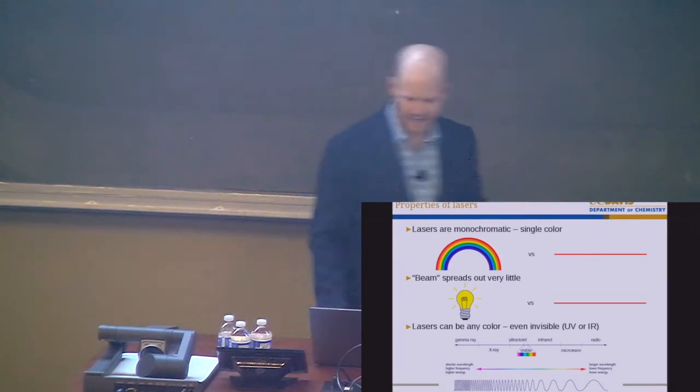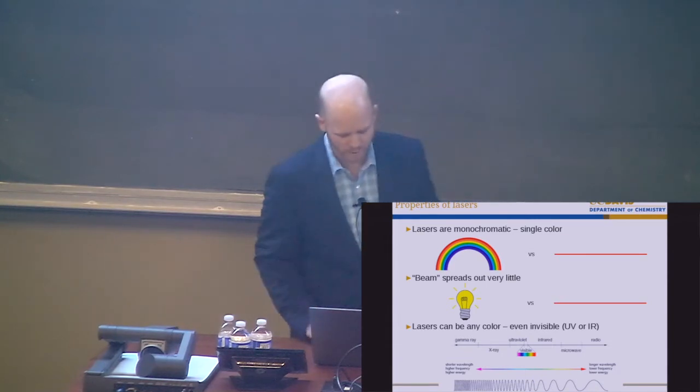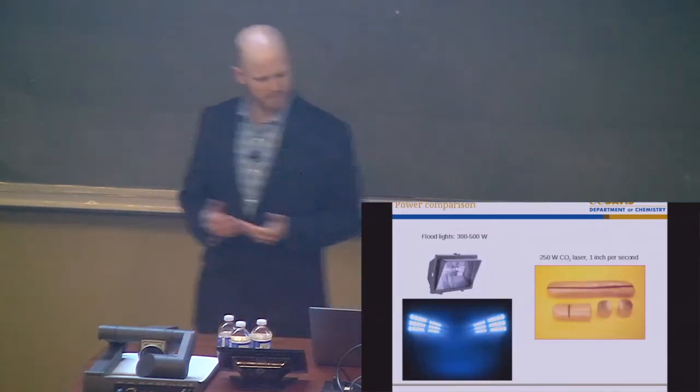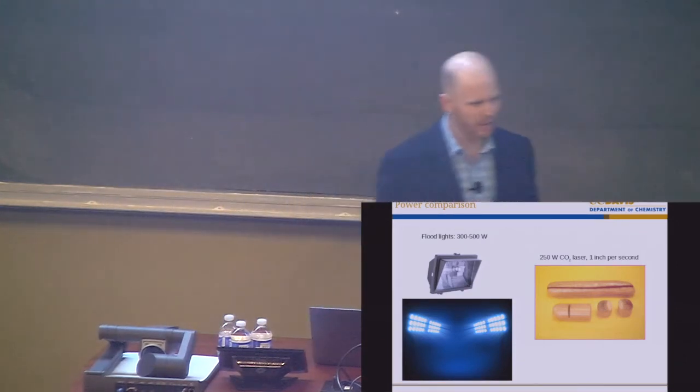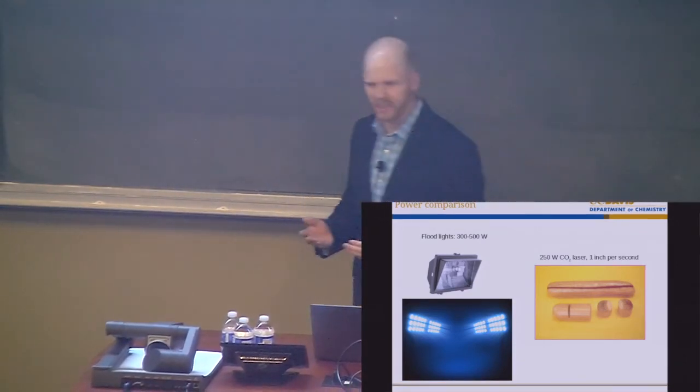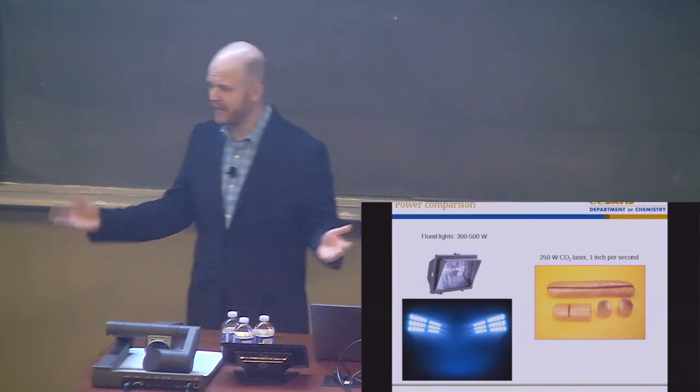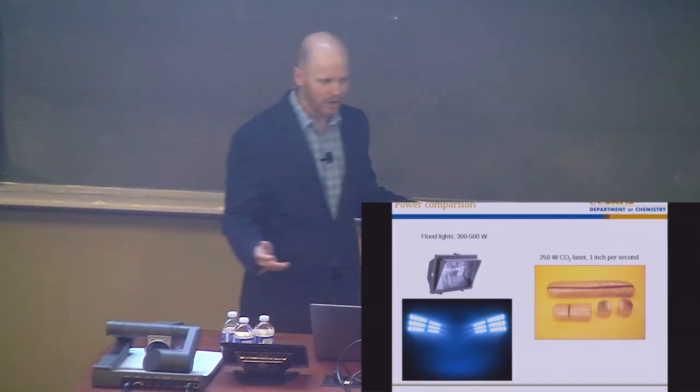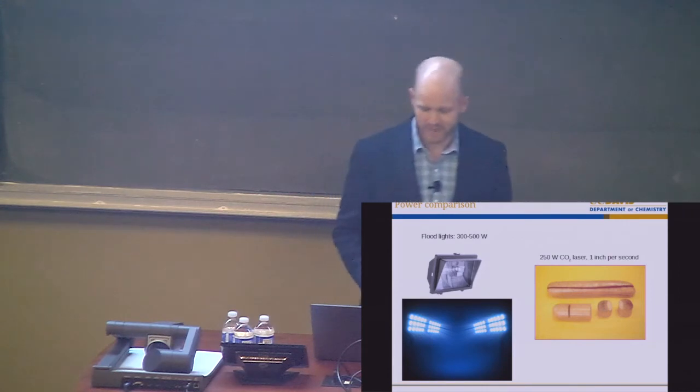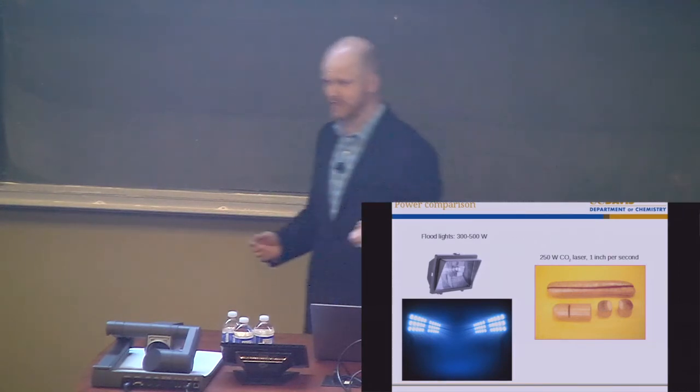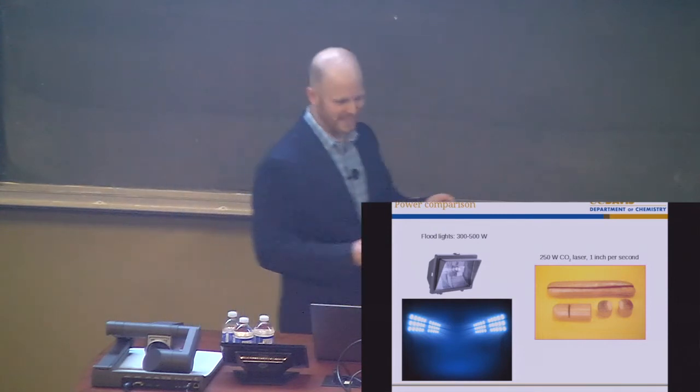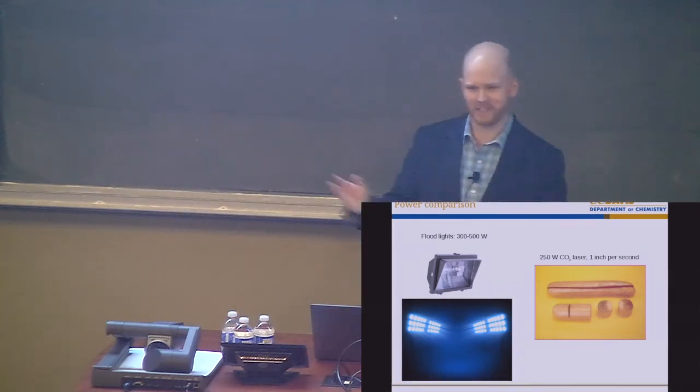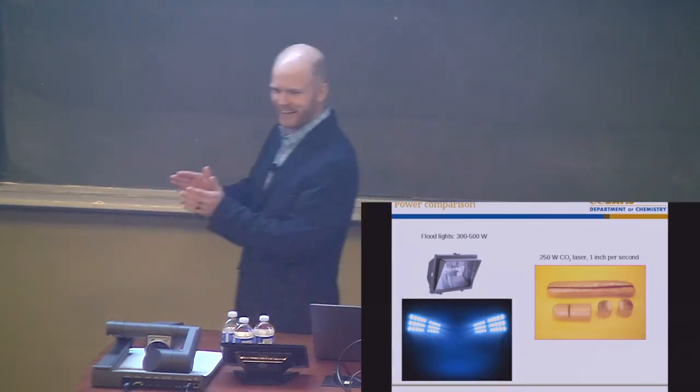And to illustrate kind of a little bit why these properties are important, let's consider the comparison to a typical light bulb, like these floodlights that you see at stadiums. A 300 to 500 watt floodlight is used in a bank to illuminate a football stadium, while a 250 watt CO2 laser moving at an inch per second will slice up a hot dog. So it's kind of a good thing for us that conventional light sources that we like to use for illumination aren't concentrated like a laser light.